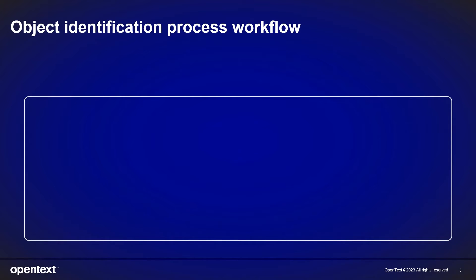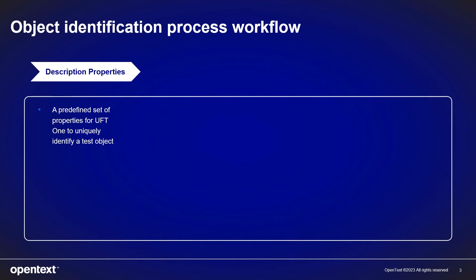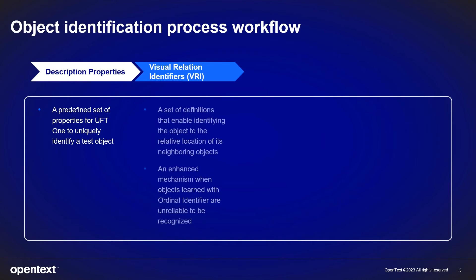What are the mechanisms that UFT One uses to identify an object and how do they work with each other? UFT One first tries with description properties — a predefined set of properties for UFT to uniquely identify an object. Most of the time, using description properties is sufficient in finding the target test object. If description properties finds more than one object, visual relation identifiers kick in to help with object identification if configured. Visual relation identifiers are a set of definitions that enable finding an object based on the relative location of its neighboring objects.